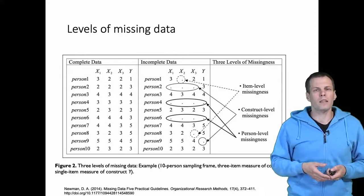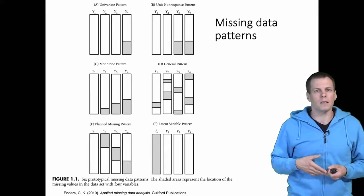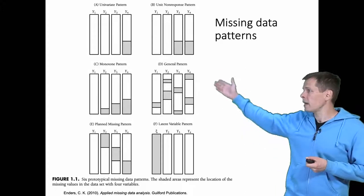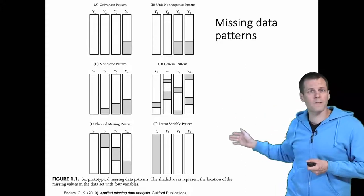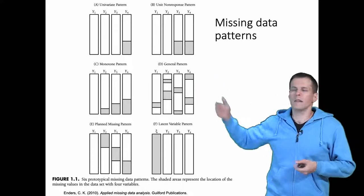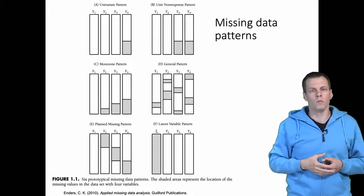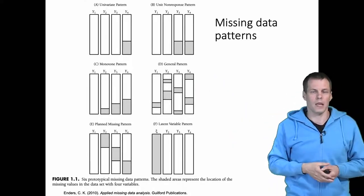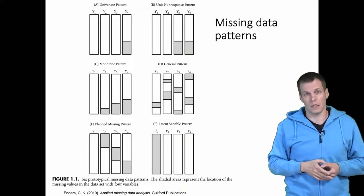Another way of looking at missing data is given by Enders. Enders explains six different patterns. The univariate pattern basically means that there's missingness in one variable, and that's the same as the item level missingness in Newman's paper.